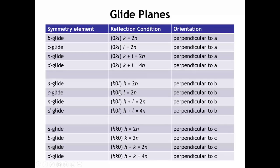If we change the orientation of the glide plane — for example, perpendicular to B — then the peaks that are affected are the H0L peaks. Perpendicular to C, the peaks that are affected are the HK0 peaks. Those are the kinds of absences we see for glide planes.